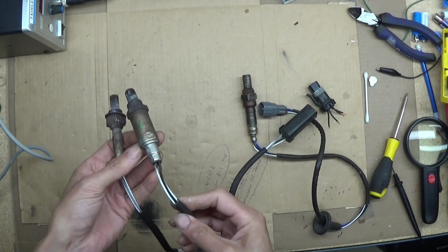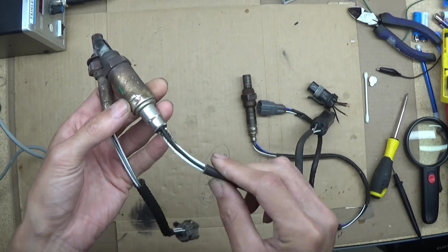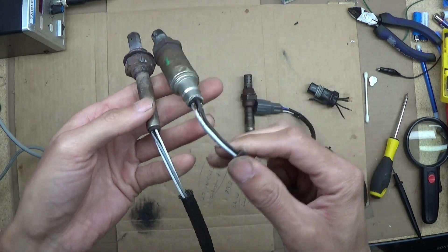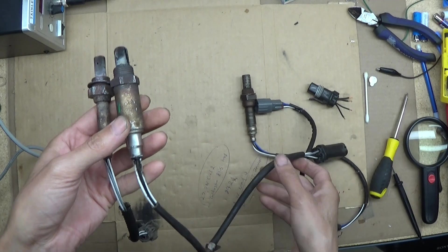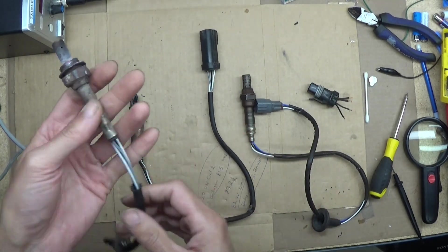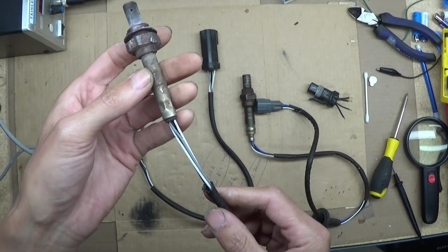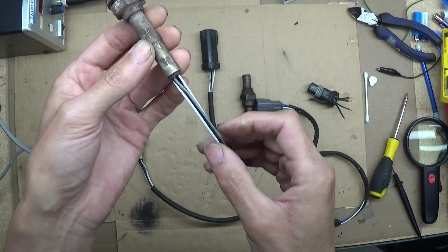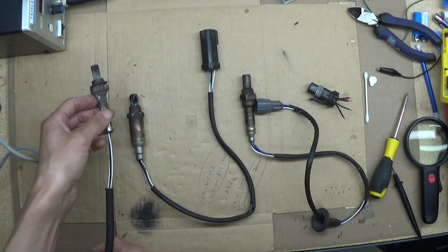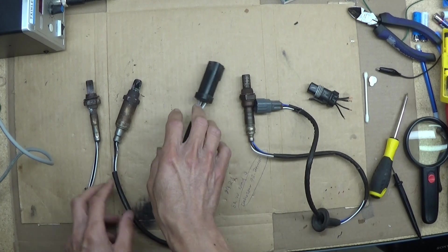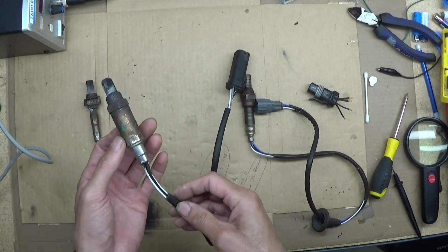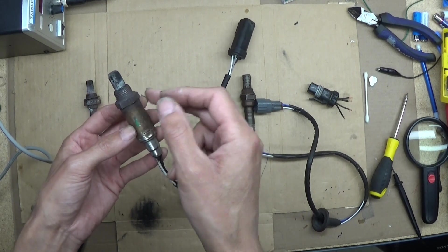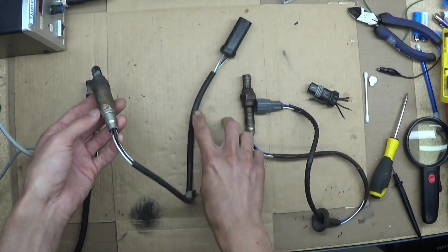As you can see, there are four wires: two white, one gray, one black. The two white wires are the heater wires, and I believe the black one is the ground and the gray one is the signal wire. They go to the PCM. The signal wire produces the voltage current that goes to the PCM.